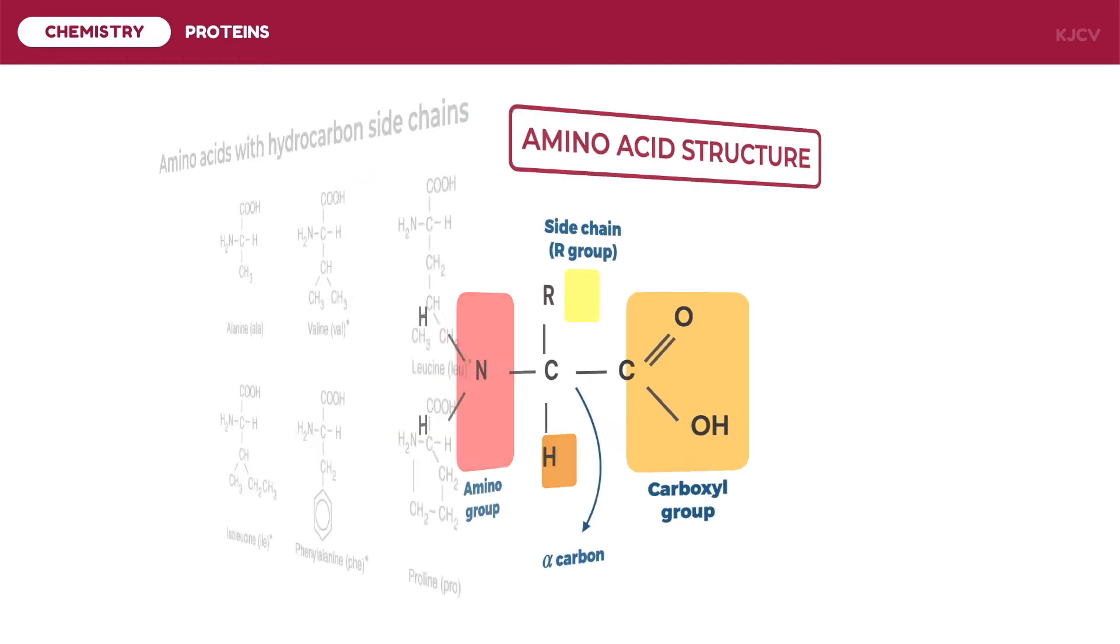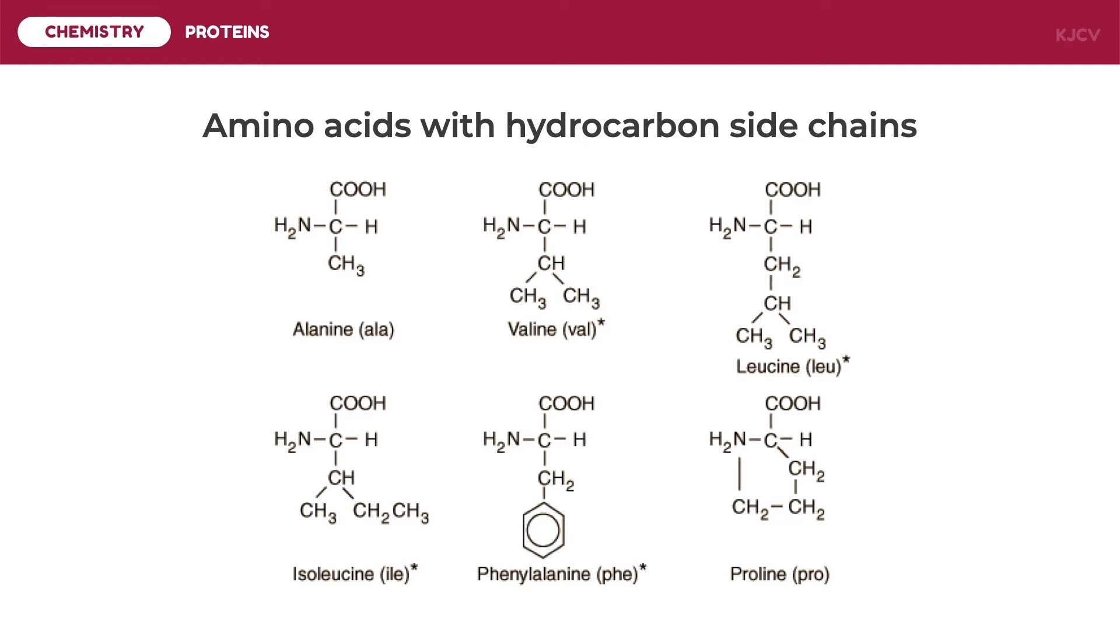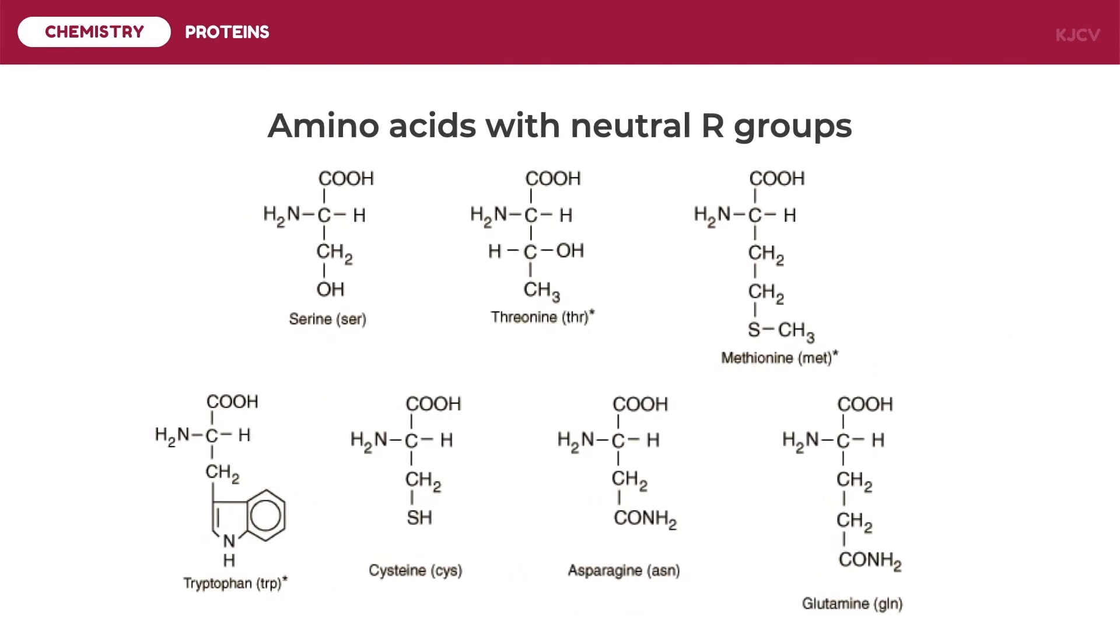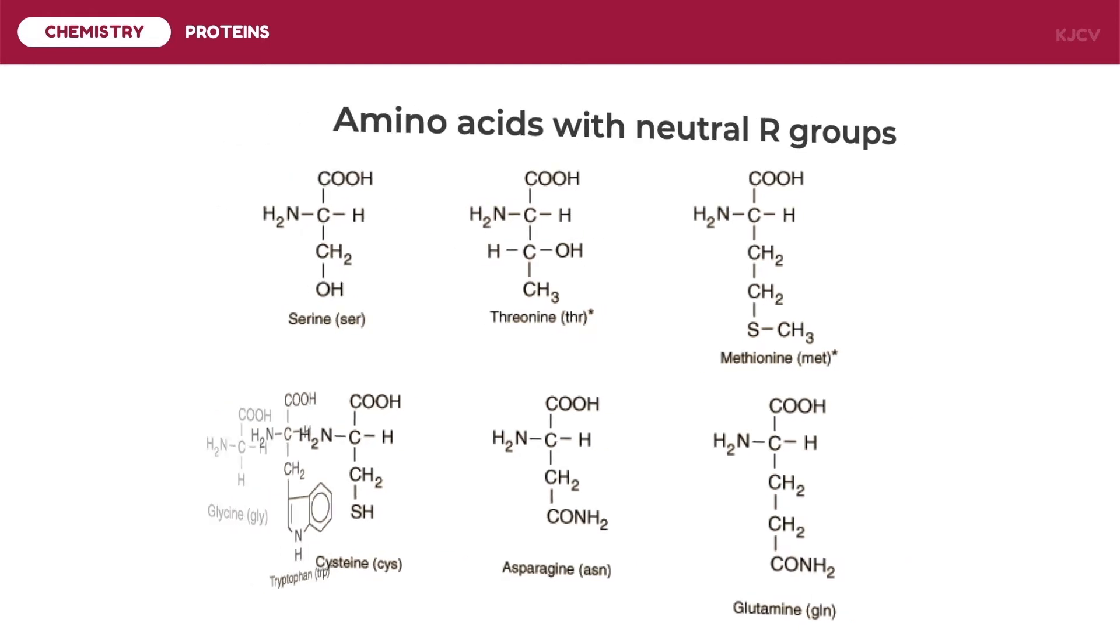There are amino acids with hydrocarbon side chains: these are alanine, valine, leucine, isoleucine, phenylalanine, and proline. There are amino acids with neutral R groups: these are serine, threonine, methionine, tryptophan, cysteine, asparagine, and glutamine.